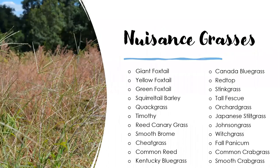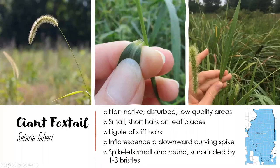Our nuisance grasses today include about 22 different grasses — this is typically where we find the most diversity. These are the ones a lot of people want to know how to identify because they're the ones we see most often. The first three grasses we're going to cover are foxtails in the Setaria genus. There are six species of foxtails in this genus in Illinois, and we're going to cover the three most common ones.